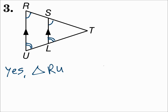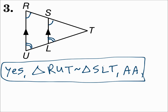For the big triangle, angle RUT is similar to — match the vertices up properly — R matches S, U matches L, and T matches T. Since two pairs of corresponding angles are congruent, the triangles are similar.